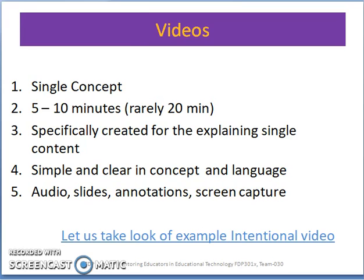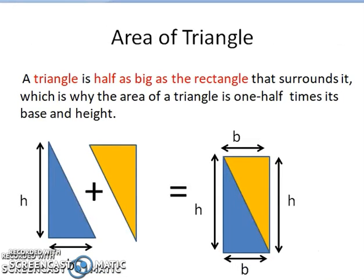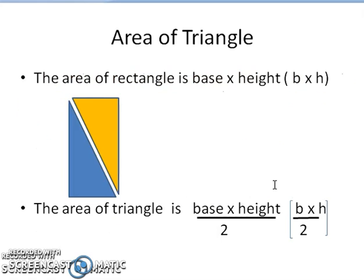Let us look at an example of an intentional video. In this video, you will learn how to calculate the area of a triangle from the area of a rectangle. The key intuition: a triangle is half as big as the rectangle that surrounds it, which is why the area of a triangle is one-half times its base and height. See the triangle which has a base and a height — draw a line and make it form a rectangle. The area of rectangle is base times height.